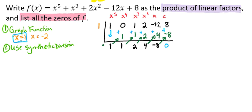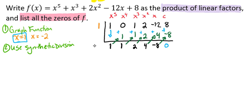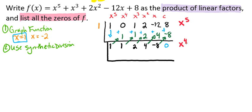Remember that synthetic division drops the polynomial down a degree. So this is now an x to the 4th, x cubed, x squared, x, and a constant. We still don't have anything easy to factor, so we're going to do synthetic division one more time, layering down. This row represents degree x to the 4th, so our next answer will be degree x to the 3rd.